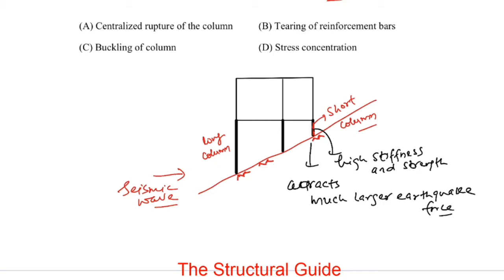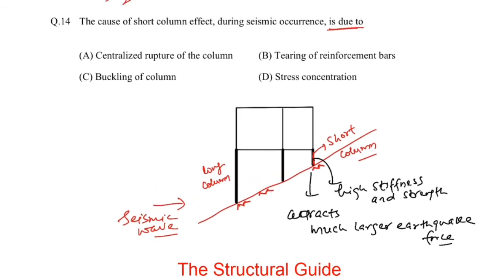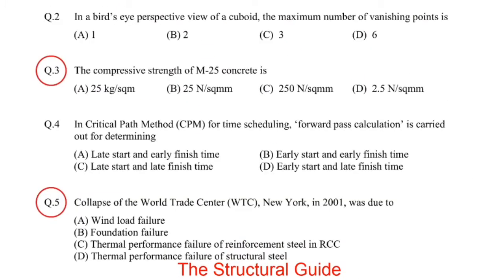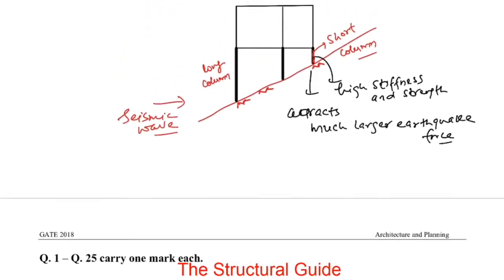Due to high stiffness and strength, there will be more damage in the short column compared to the long column. This is because of stress concentration in the short column. So the cause of the short column effect is stress concentration, and the correct answer is option D — stress concentration. Now let's move to the first question from Gate 2018.